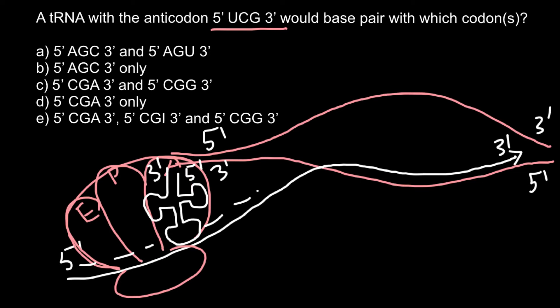We know that the sequence of the anticodon is 5'-UCG. So the anticodon has U, C, and G. That means that the messenger RNA codon here would be complementary to this sequence — the sequence of the anticodon would be complementary to the sequence of the codon.